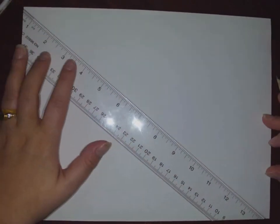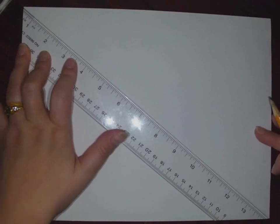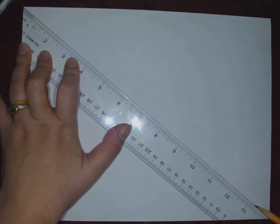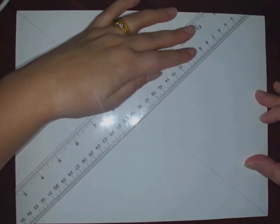The easiest way to start is to do an X from corner to corner. You don't want to press hard when you're doing this, so just a light line. A normal pencil line, I'm not pressing incredibly hard.